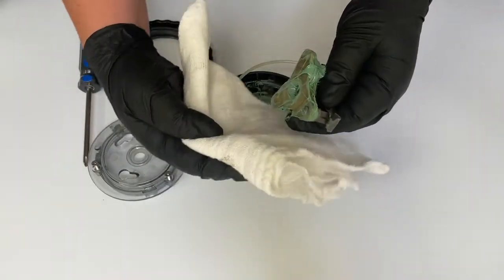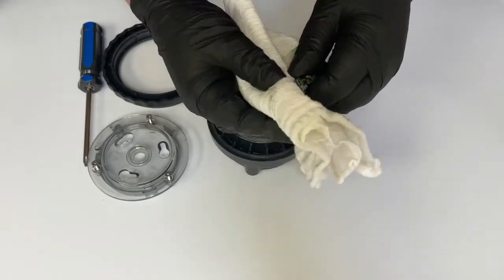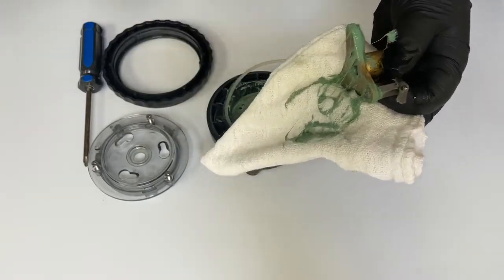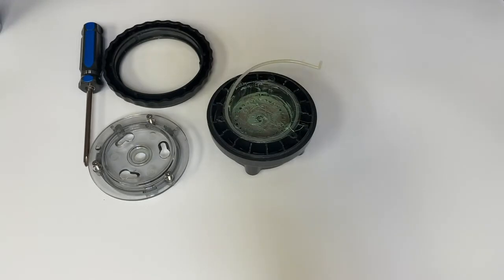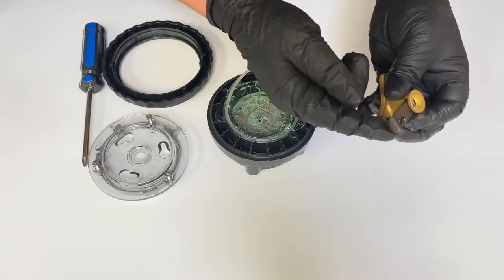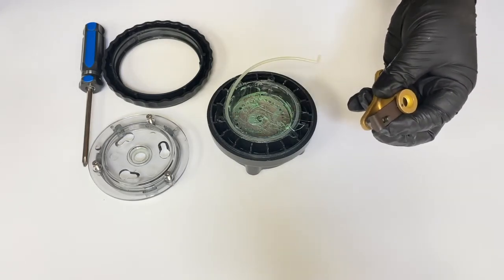Remove the brass spider and clean thoroughly with degreaser. Inspect the lifter, the tip should be slightly rounded. If the tip is flat, replace it.